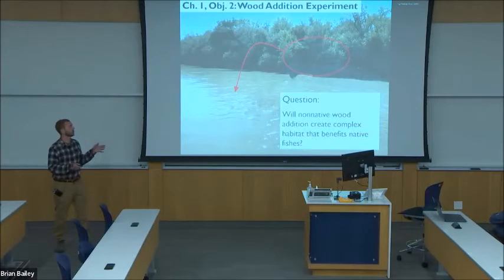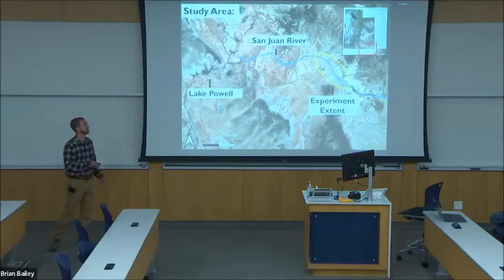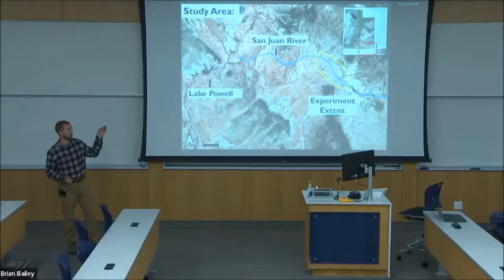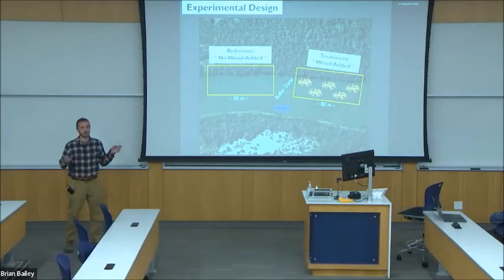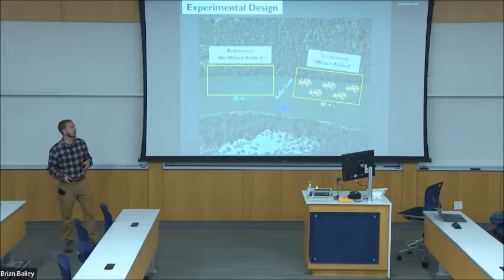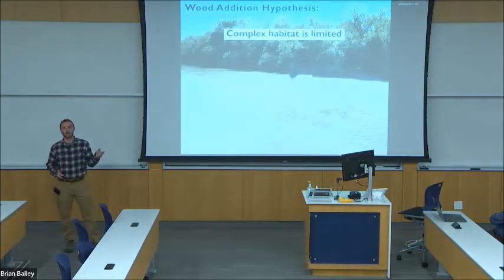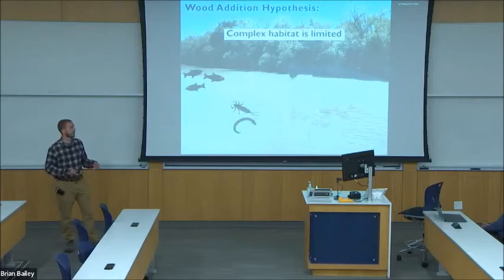The second objective of my first chapter will explore the efficacy of taking advantage of that non-native vegetation and adding it to the river, with the research question being: will this create complex habitat that can benefit native fishes? My research hypothesis is that complex habitat is limited in the main channel for native fishes, and the response variables I will look into are fish densities, which I think will increase with the addition of wood; macroinvertebrate densities and biomass, which I think will increase; and flow velocities, which I think will decrease.